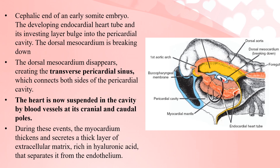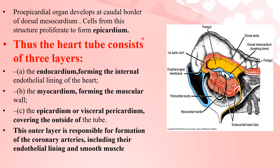The pro-epicardial region is also very important. It is present at the caudal border of the dorsal mesocardium, and from this area cells arise that will form the epicardium and later the third layer of the heart. Thus the heart tube consists of three layers: endocardium, myocardium, and epicardium.